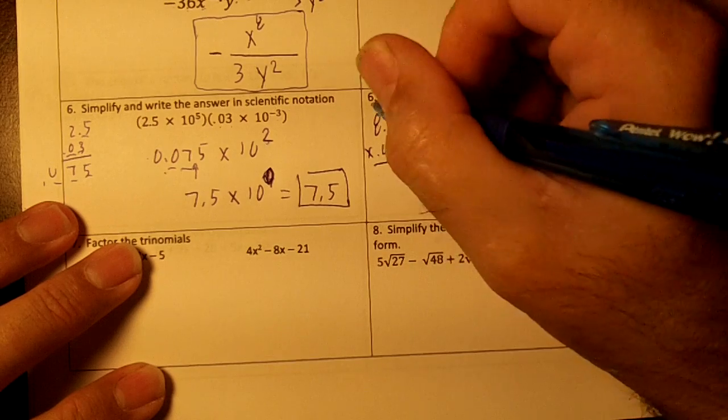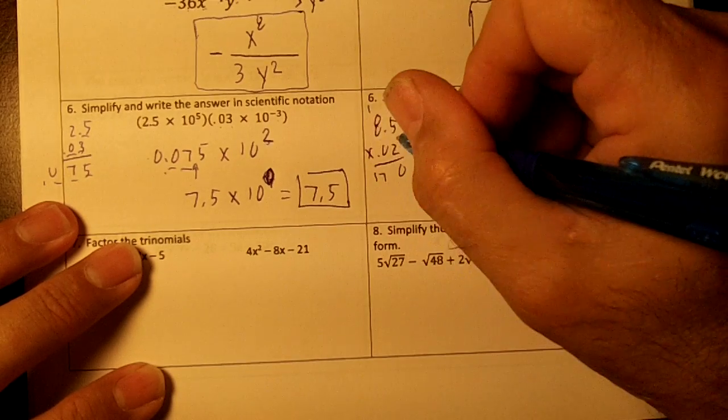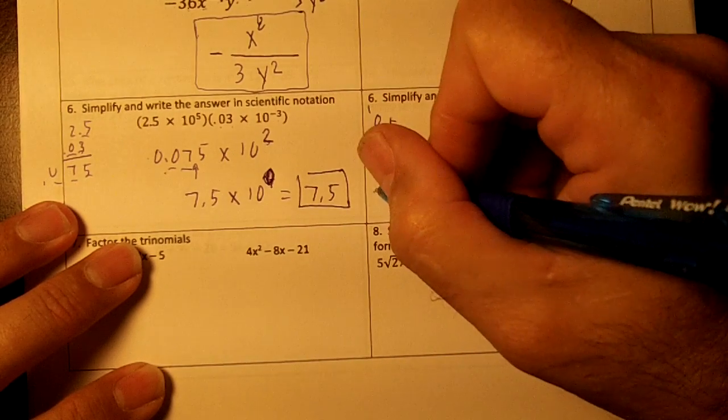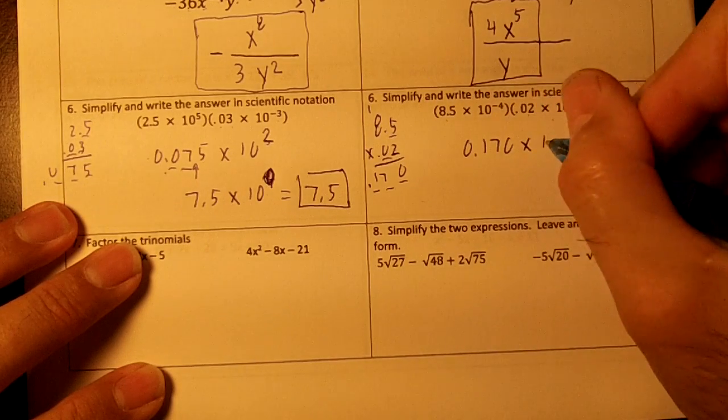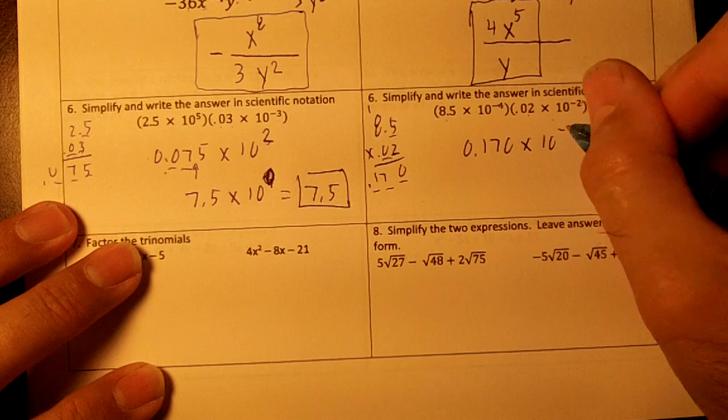I'm going 2 times 5 is 10, carry the 1, 16, 17. I got 0.170 times 10. Negative 4, negative 2 is negative 6.